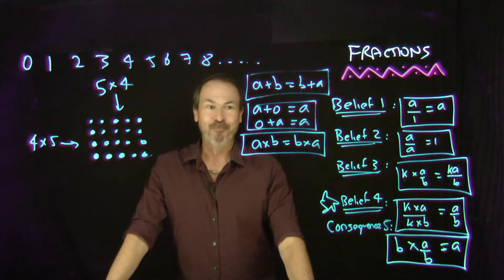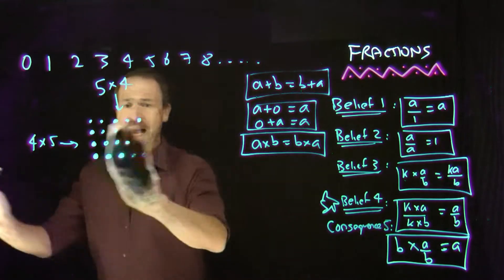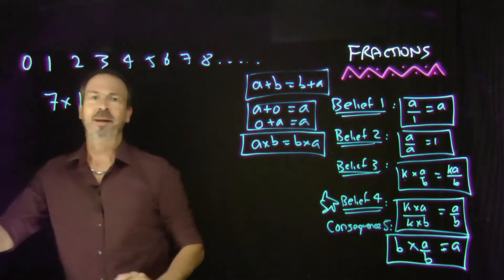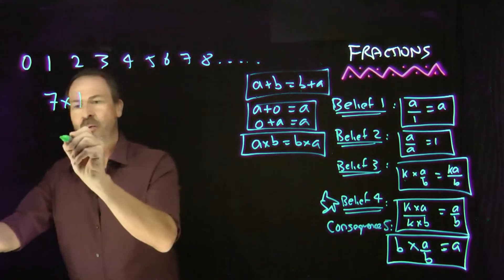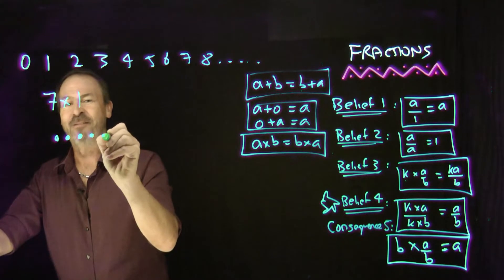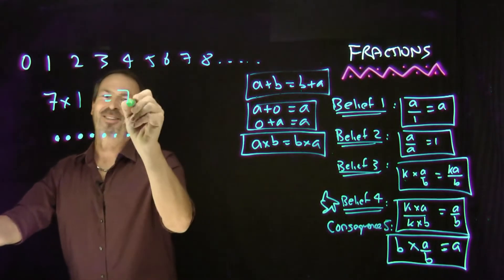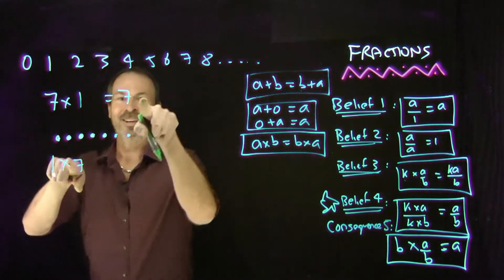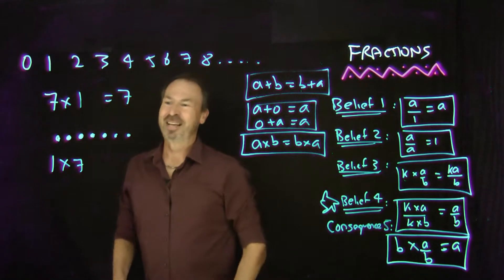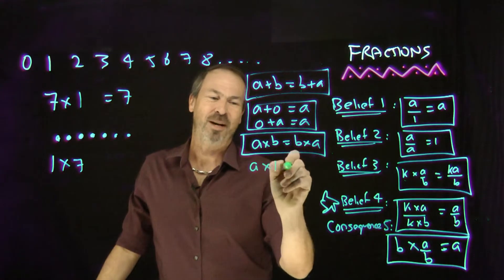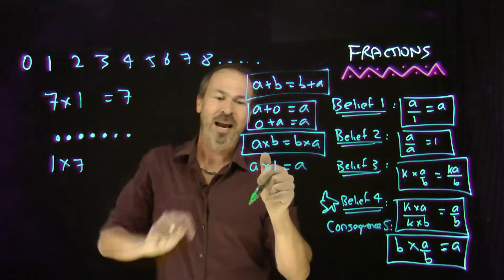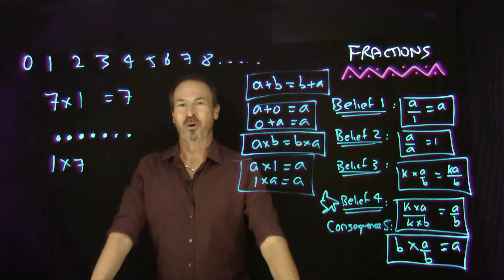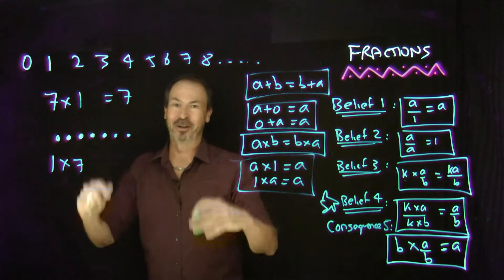Let's look at what I did previously: 7 groups of 1. If I drew that picture — one group of 1, second group of 1, third, fourth, fifth, sixth, seventh group of 1 — that's 7 dots. Or if I did 1 group of 7, there's one group of 7, and it's also 7 dots. So another fundamental belief is that a times 1 is a, and 1 times a is also a. Multiplying by 1 doesn't change the number.